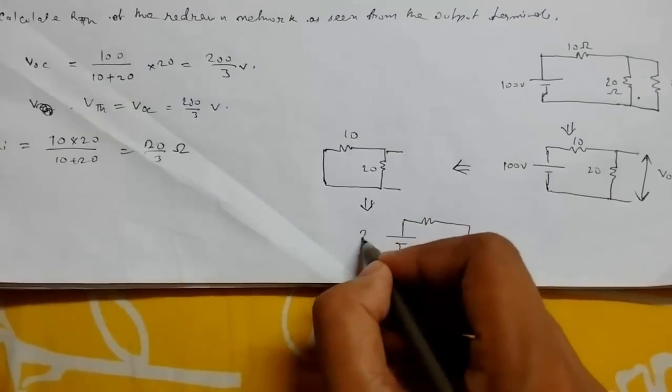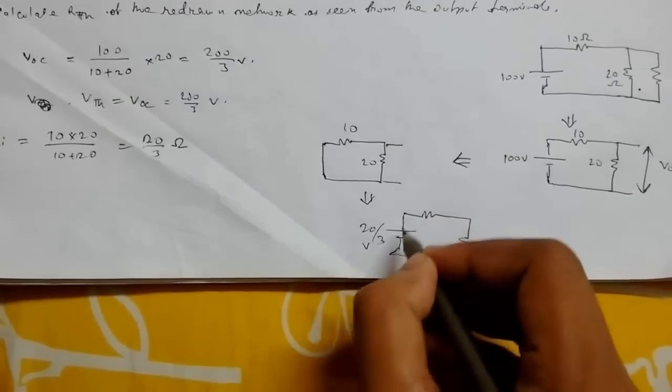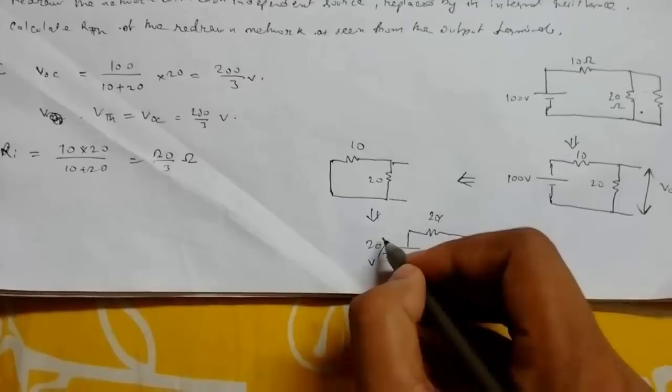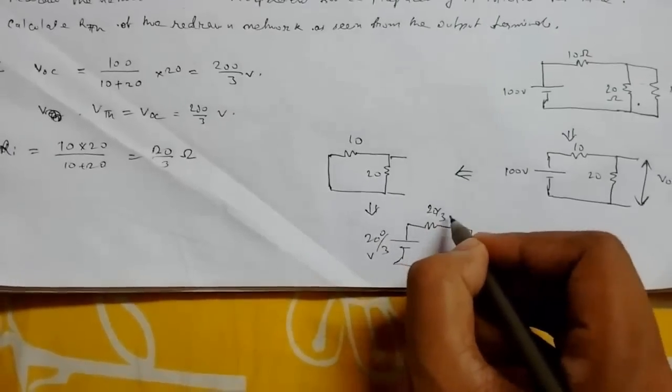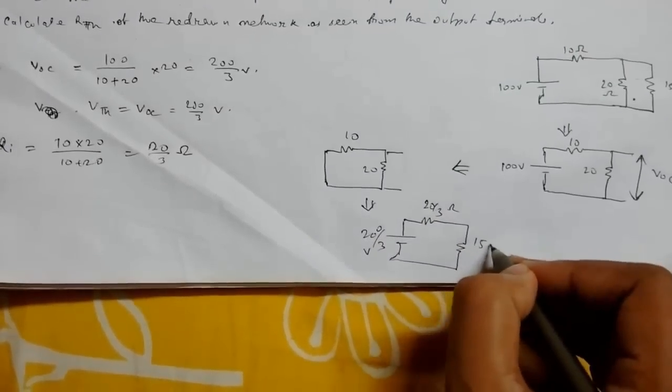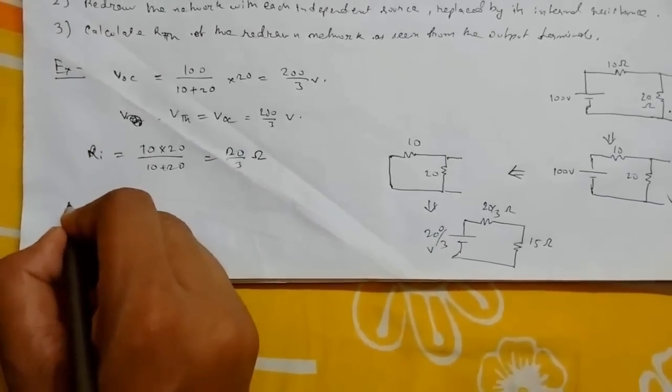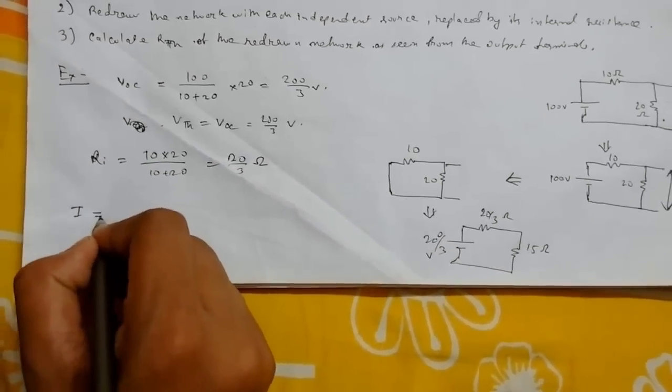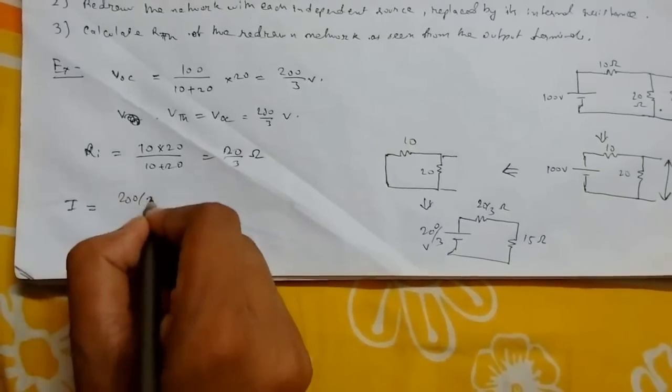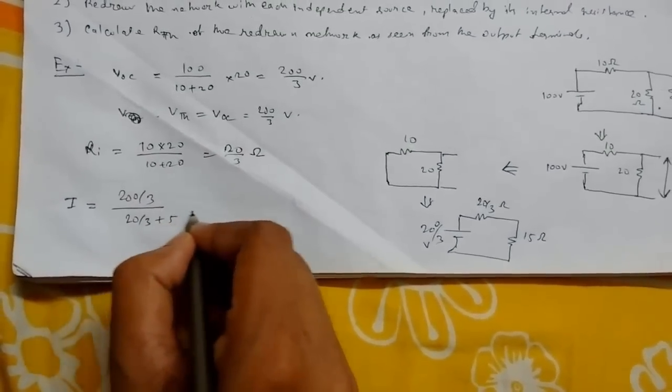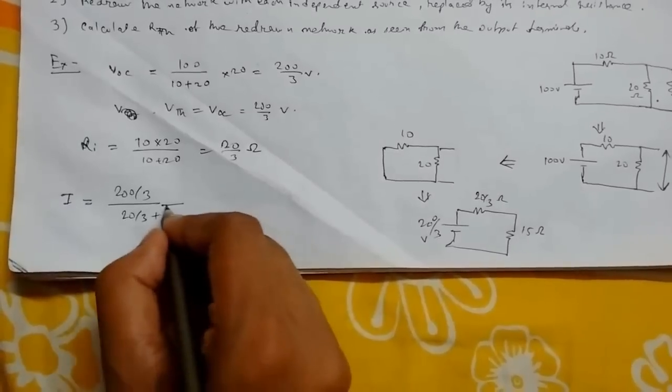This is our 200 by 3 volts, this will be 20 by 3 ohm, and this will be 15 ohm. So the current through the 15 ohm resistance will be given as I equals 200 upon 3 divided by (20 by 3 plus 15). Total voltage upon total resistance. This will be 3.07 ampere.